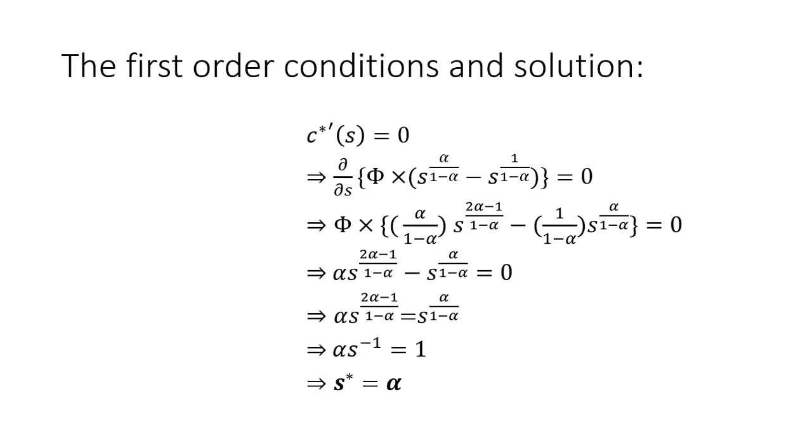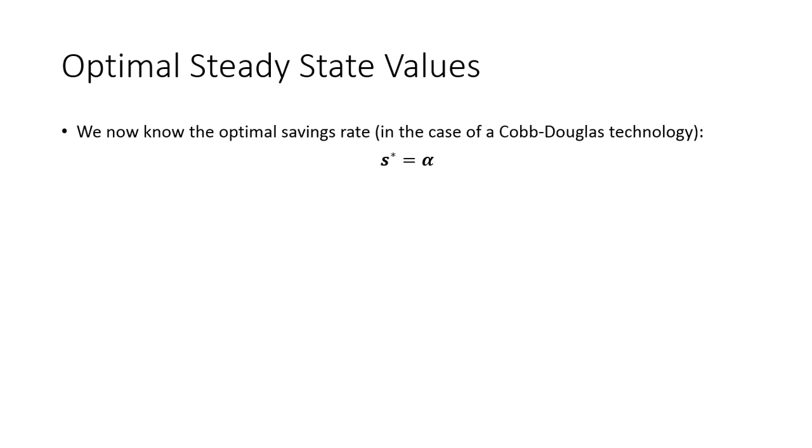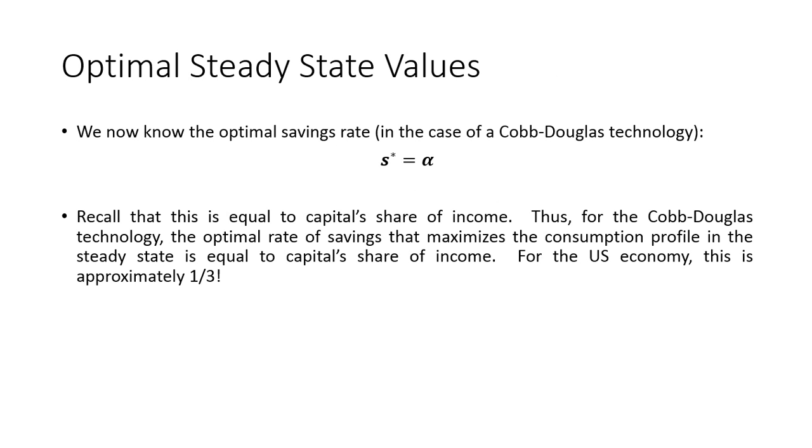And we finally find the optimal savings rate. We get a very simple solution. The optimal savings rate here that maximizes the consumption profile is just equal to alpha. So the next thing we want to do is interpret this result. We found the optimal savings rate equals alpha. And remember what alpha was. This was just capital share of income. So for the Cobb-Douglas technology, we just found out that the optimal savings rate for the economy to give us the highest standard of living is equal to capital share of income. And we know for the U.S. economy, this is approximately 33% based on the data.